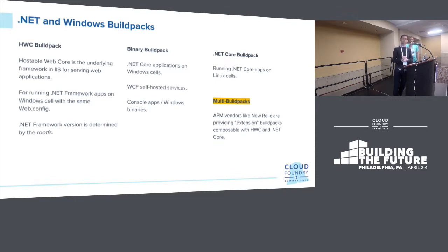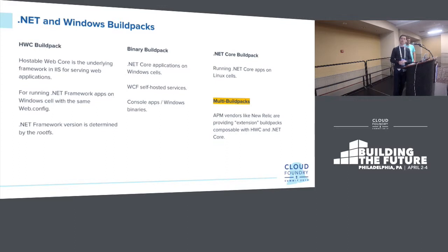There are a few build packs to be aware of when working with .NET and Windows apps. First is the HWC build pack — Hostable Web Core — effectively all of the IIS framework that handles web requests, a much lighter weight framework than running full IIS. That's the framework we hook into to run full .NET framework apps on Windows. There's also a binary build pack for Windows, for running .NET Core applications on Windows cells when you have dependencies that can only be installed on Windows — like IBM MQ.